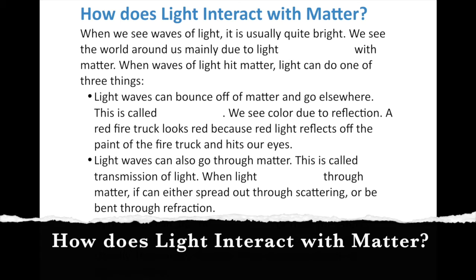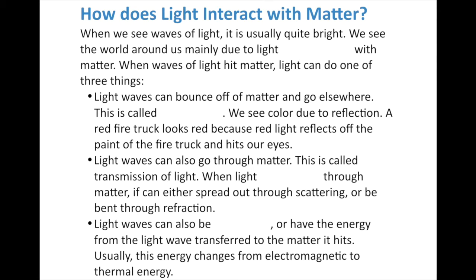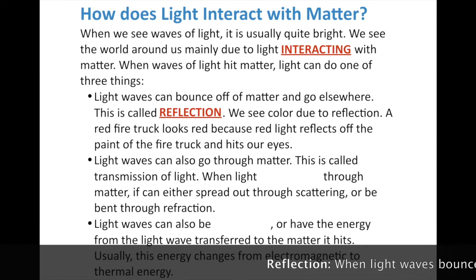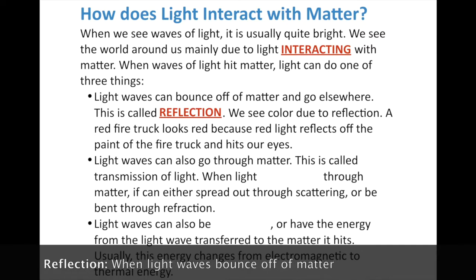When we see waves of light, it's usually quite bright. Have you ever shined a flashlight in your eyes? We see the world around us mainly due to light interacting with matter. When waves of light hit matter, light can do one of three things. First, light waves can bounce off of matter and go elsewhere — this is what we call reflection. A red fire truck looks red because the red light reflects off the paint and hits our eyes.